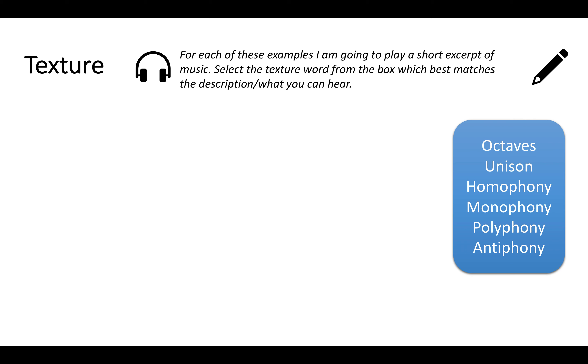So moving on to texture, I'm going to play four different examples of different pieces of music. And I'd like you to select the correct word from this box here that describes the texture of those pieces. And remember that texture means the different layers of music. So how many layers are there and how are they working together? So here they come.